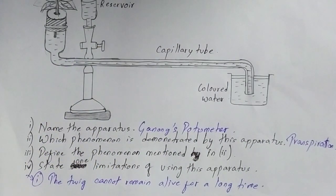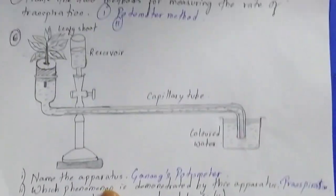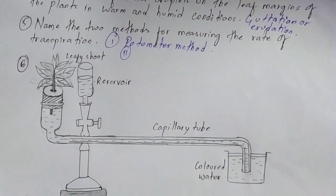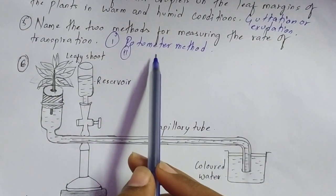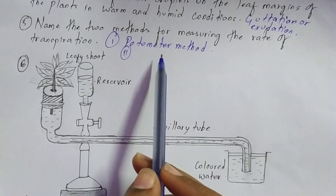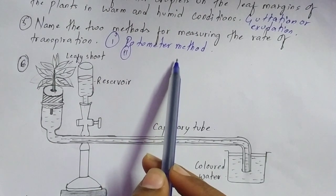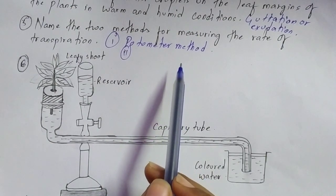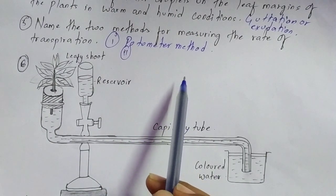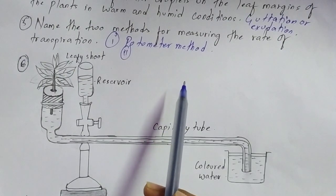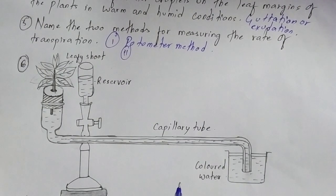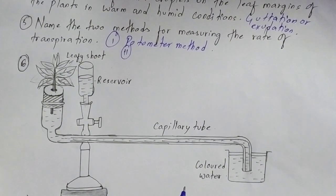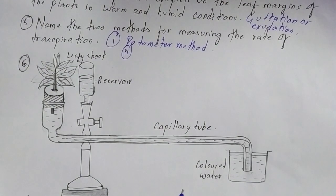Don't forget to answer question number five — the second method for measuring the rate of transpiration. One I have already said is the potometer method, and the other method you are going to write to us in the comment section. So friends, this was the video. Thanks for watching. If you have any doubts or queries related to your board examinations or regarding any of the answers, you can write to us in the comment section. Thank you.